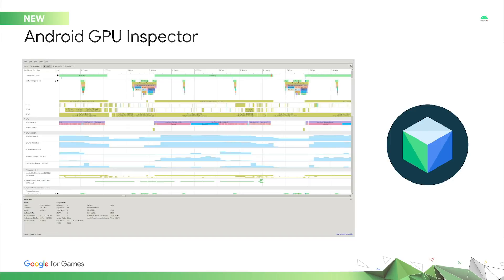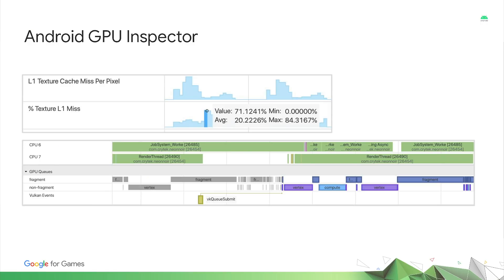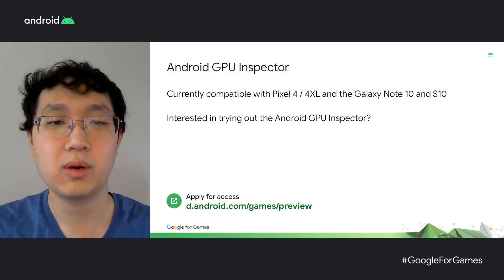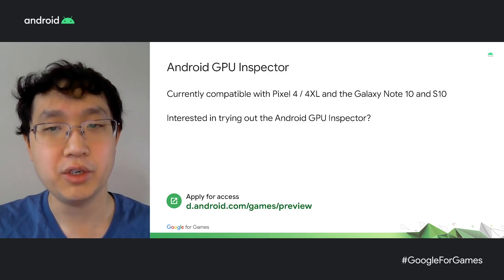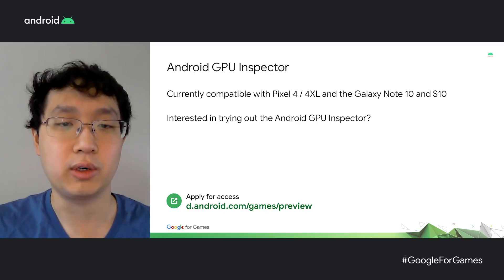Finally, we've heard your feedback that optimizing graphics on Android is difficult. The GPU is often a black box, and different GPU vendors require different tools to gain any insights. To solve this, today we're announcing a developer preview of the Android GPU Inspector. Now you have a single tool that works across both Qualcomm and ARM GPUs and provides insights into how your game is using GPU resources and areas for optimization. You'll be able to uncover deeper graphics insights that were never handily available before, such as GPU counters. And when using Vulkan, you'll get GPU activity and timing data. Currently, the tool supports Pixel 4, 4XL, and the Galaxy Note 10 and S10, and we'll be expanding our device coverage over time. If you're interested in trying it out, apply for access for the preview at the URL on the screen.